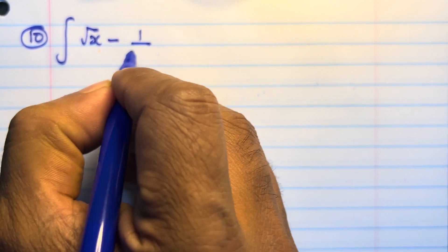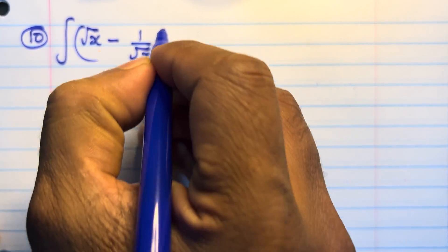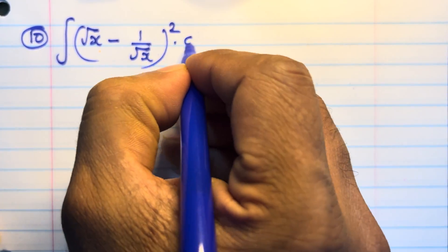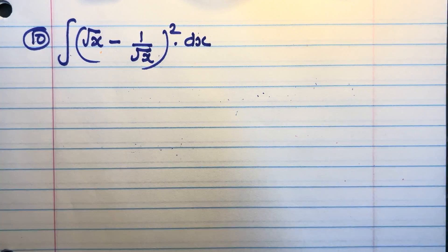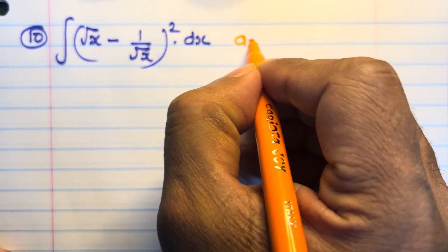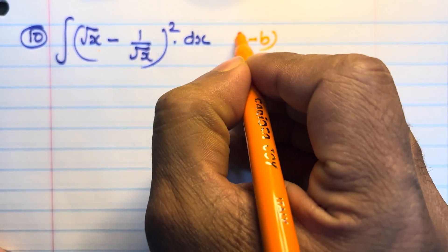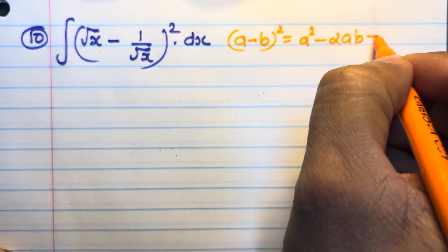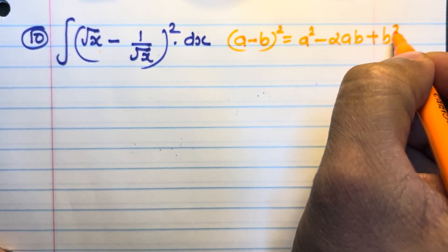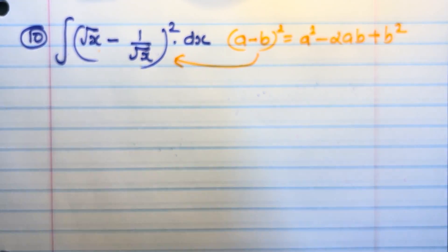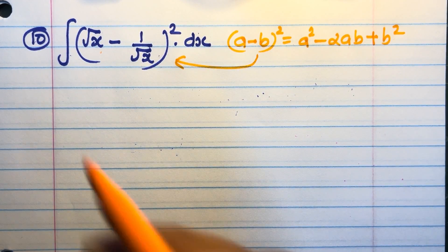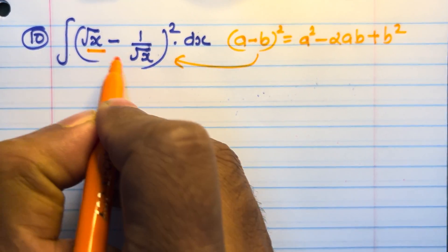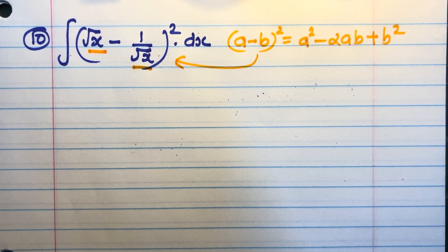Question number 10. Integral of (√x − 1/√x)² dx. We know that (a − b)² = a² − 2ab + b². Please apply this formula, where the value of a is √x and the value of b is 1/√x.